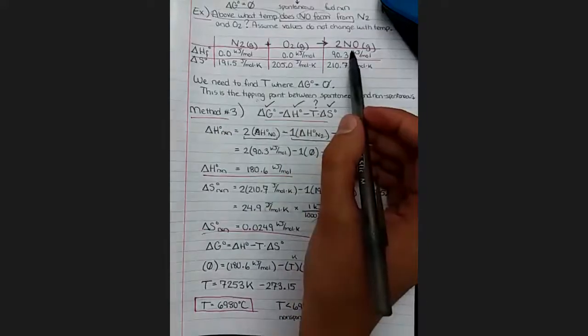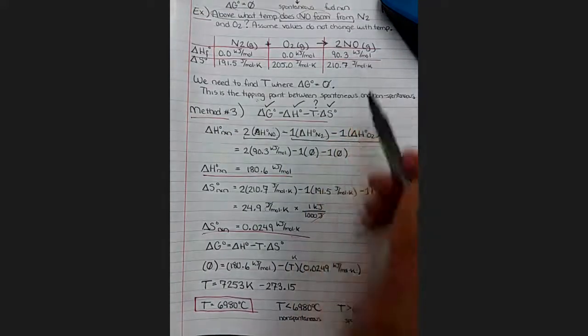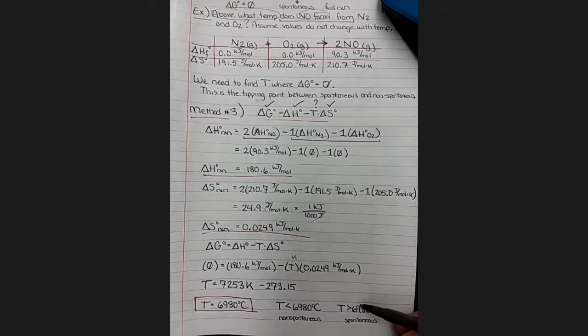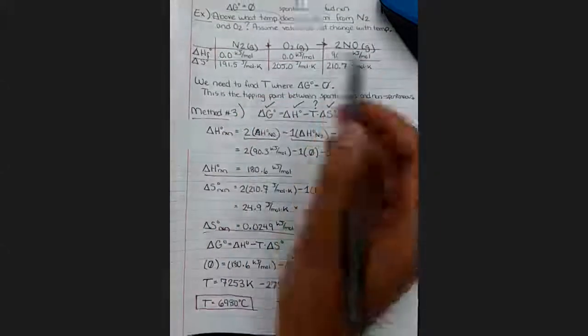And that's because nitrogen N2 is one of the most stable compounds that exists and so I would expect it would take an awful lot of energy input to convince this compound to react to form NO. And so by that logic it does seem reasonable that the amount of heat it takes to force this reaction to be spontaneous would be so incredibly large.